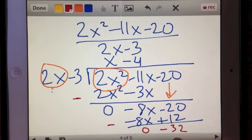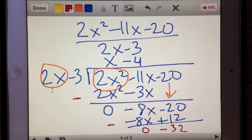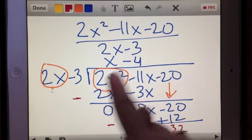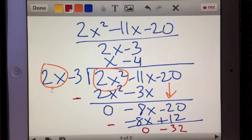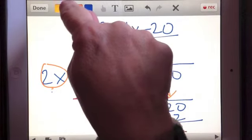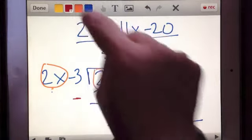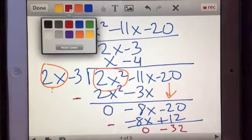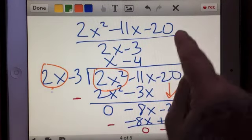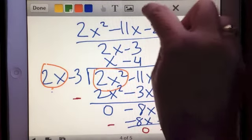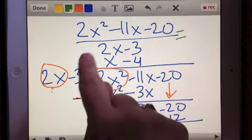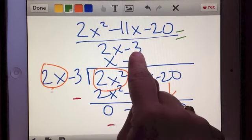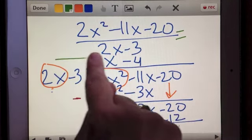And now I have a leftover because there's nothing I can multiply to 2x to get me a negative 32. So I'm going to actually rewrite the answer, the solution here, on a different page. And then we can compare it.